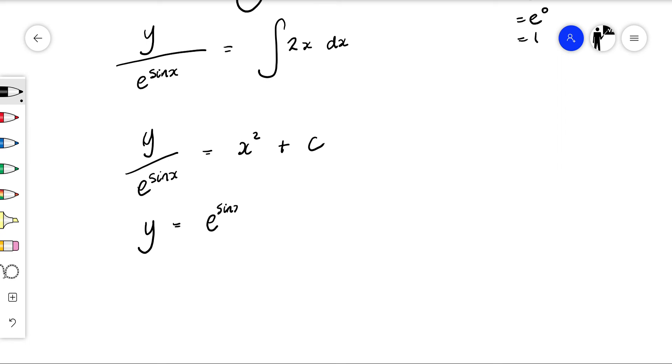So y equals e to the sine x times x squared plus c. You can write it in many different ways - you could have written e to the sine x times x squared plus e to the sine x times c. This is our general solution.